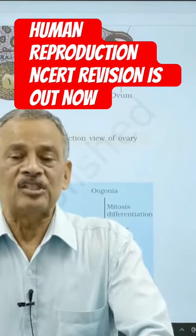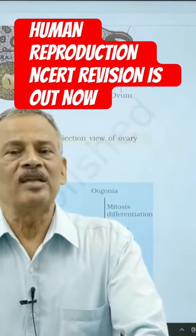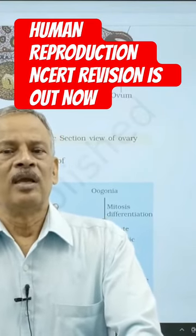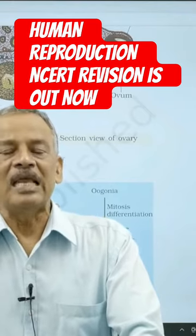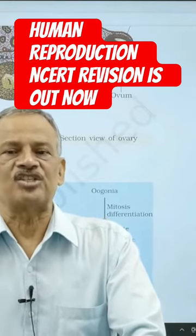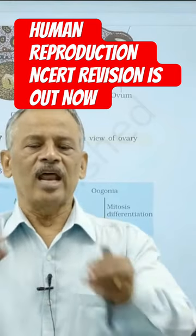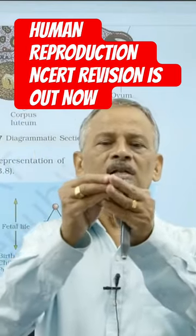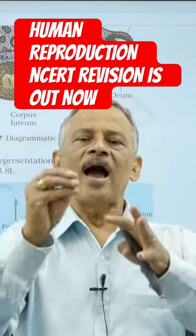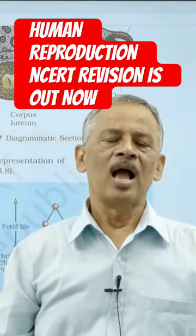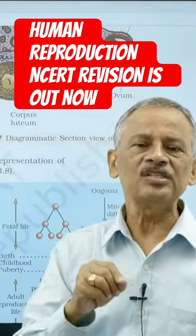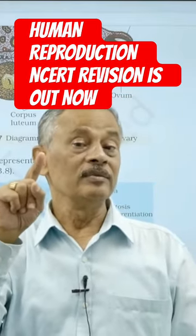A hormone called LH, luteinizing hormone, causes a sudden increase known as the LH surge. This LH surge causes the Graafian follicle to burst and release the ovum. When the ovum is released, it is only in the secondary oocyte stage.